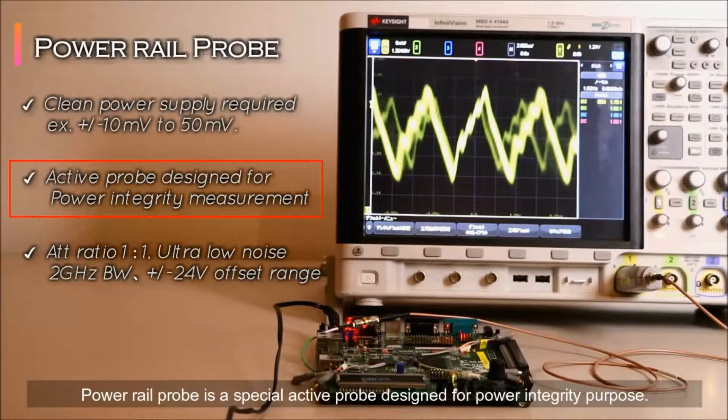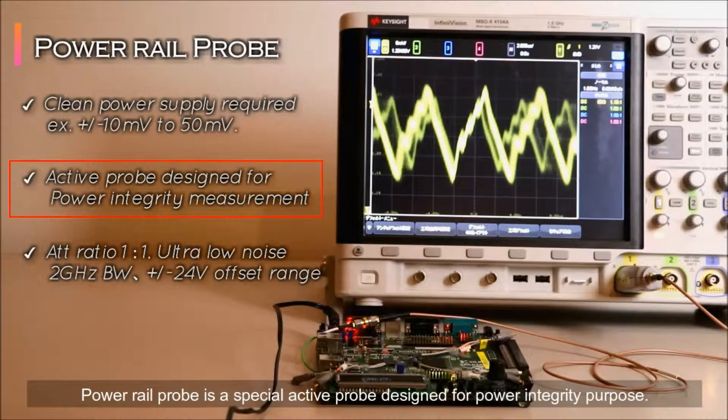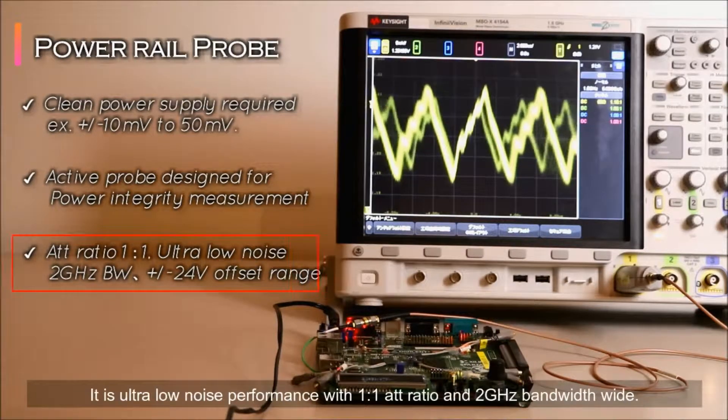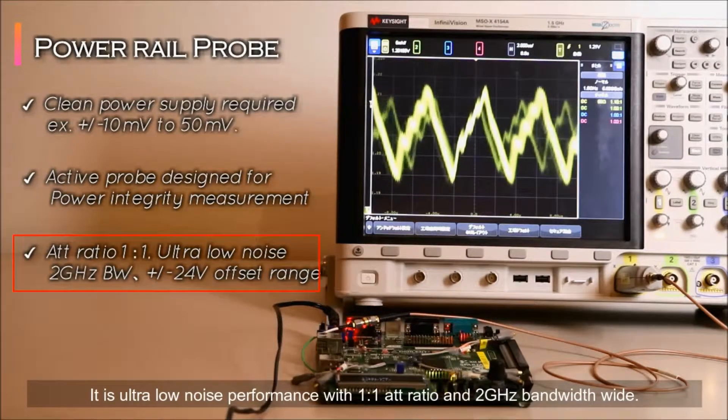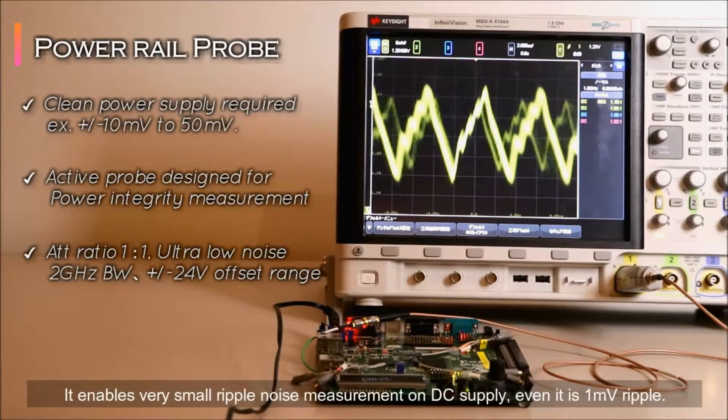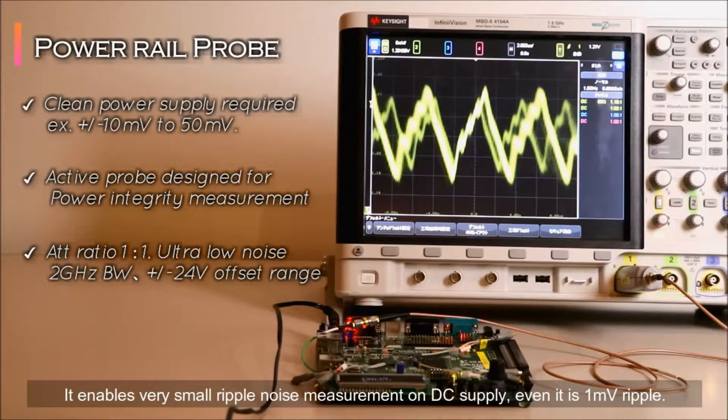PowerRail probe is a special active probe designed for power integrity purpose. It is ultra-low noise performance with 1 to 1 attenuation ratio and 2GHz bandwidth. It enables very small ripple noise measurement on DC supply, even if it is 1mV ripple.